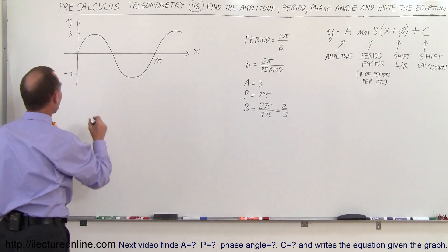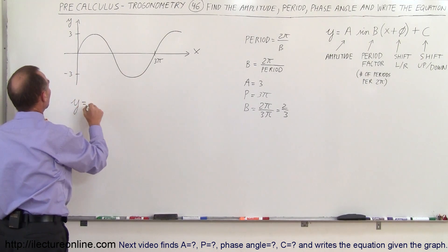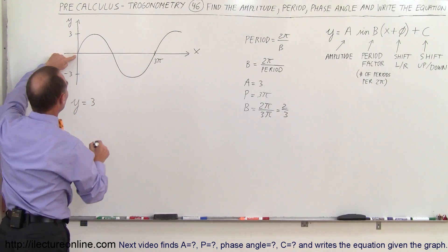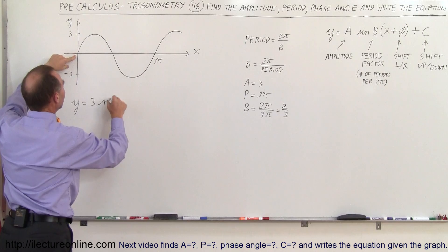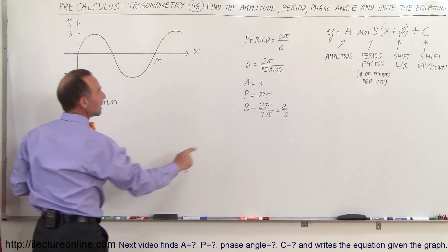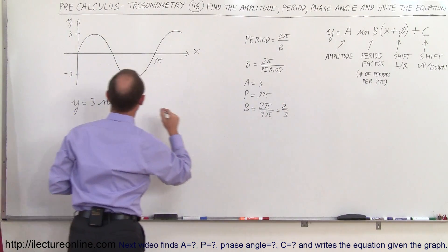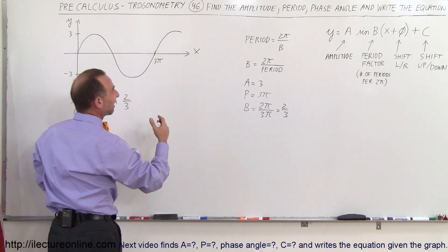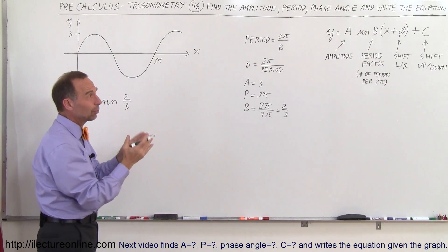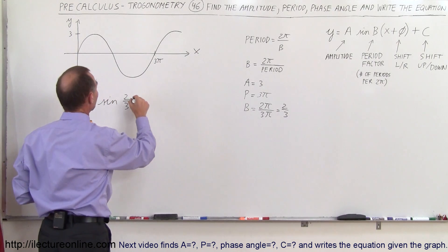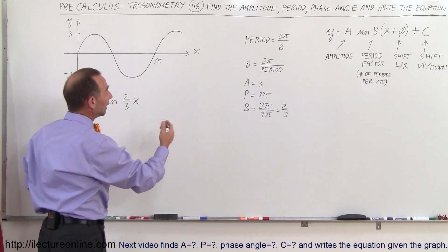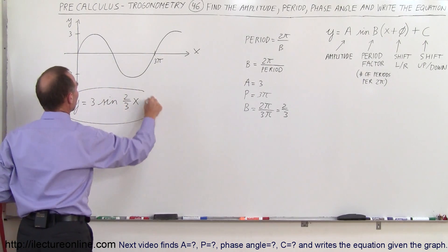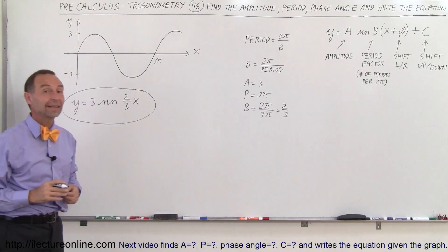Alright, we're ready to write it now. So y is equal to — we write the amplitude which is 3, and we're going to write a sine function: sine. The period factor is 2/3, so we write 2/3 here. In this case we don't have a phase angle so we don't need parentheses — we can simply write 2/3 times x. No phase angle and no vertical shift, so this is the function we're looking for. That's how we do that.